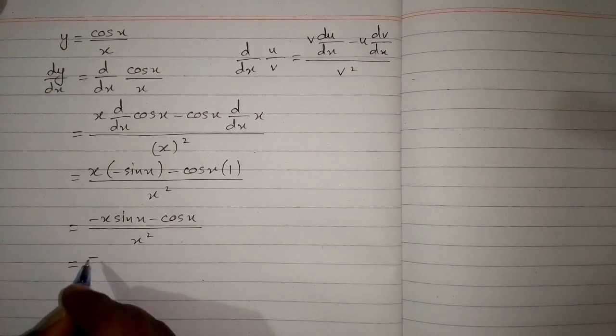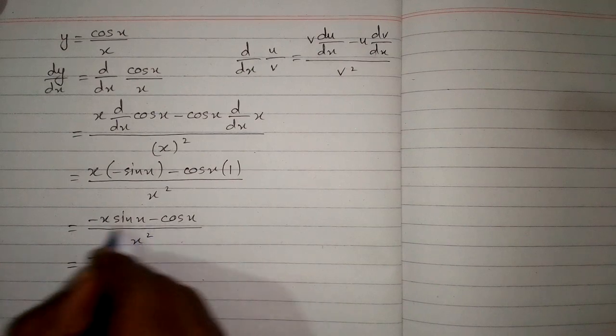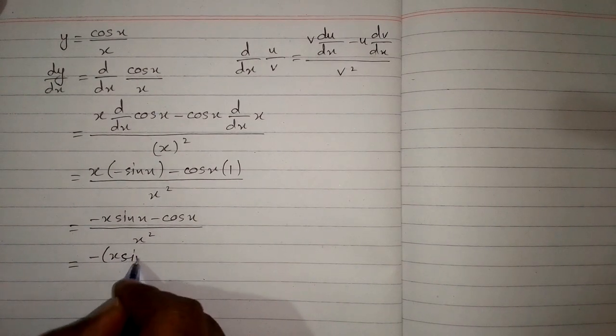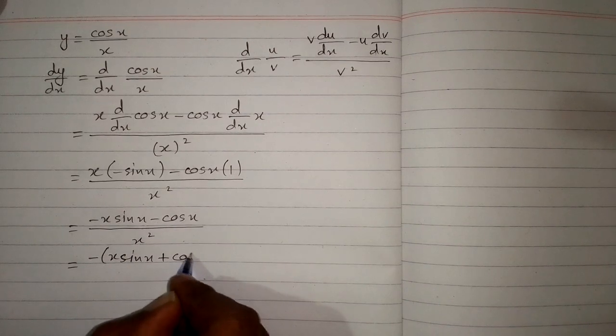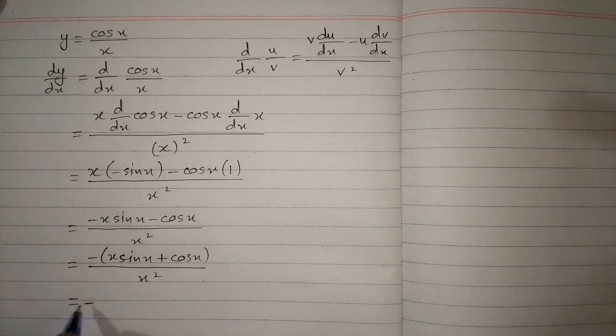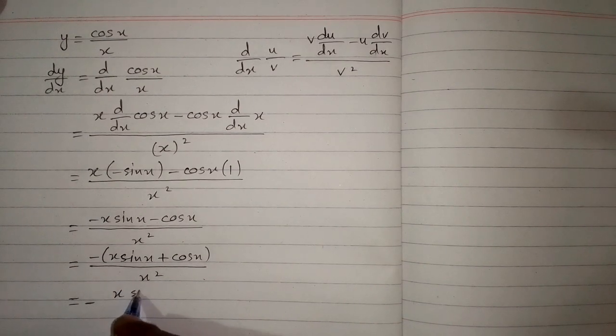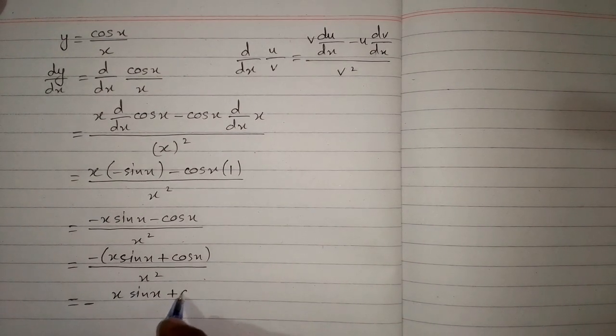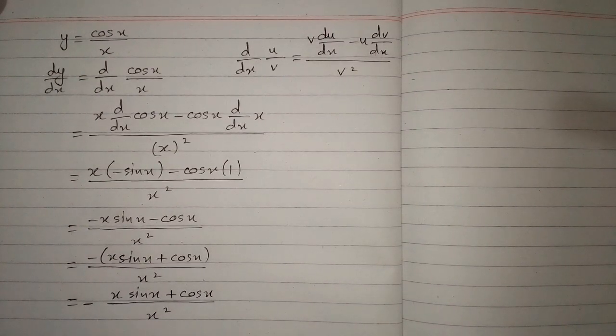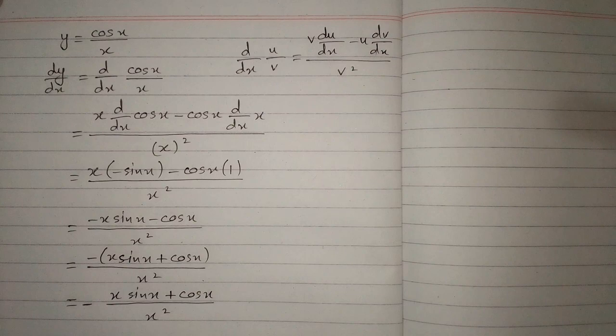We can take minus common in the numerator. So we have minus x times sin x plus cos x. This can be written as minus x times sin x plus cos x upon x squared. And this is the required answer.